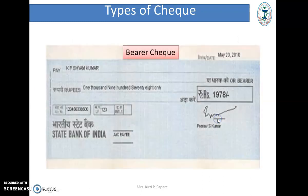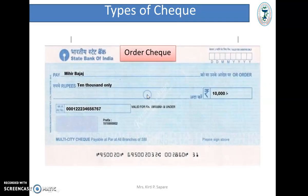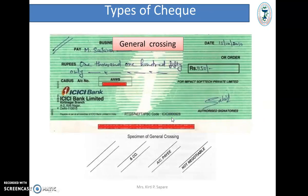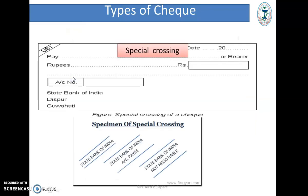This is an example of a Bearer Check — the word 'bearer' is written, so anyone who carries this check will get the money. In an Order Check, the word 'order' is mentioned, so a person can get the money but it requires an order from the payee. In General Crossing, two lines are drawn, meaning money is deposited into a person's account at any bank. In Special Crossing, the name of a specific bank is mentioned between the lines — for example, this check should be deposited only in the account of State Bank of India.